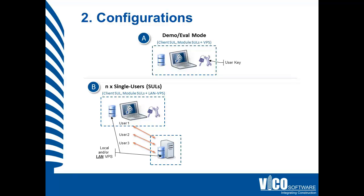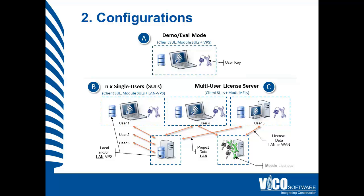Configuration B introduces more users with their own licenses, working on the same projects on the same project server. Configuration C introduces the Vico license manager, where VicoOffice module licenses are shared between multiple users — we call them floating licenses, also referred to as network or multi-user licenses. Users can connect via the LAN or WAN to check out those licenses for individual modules. Note that in collaborative deployments, the VPS and the VLM are usually on the same dedicated Vico server.